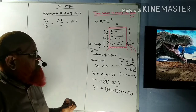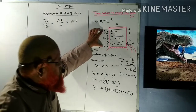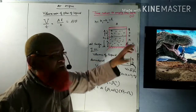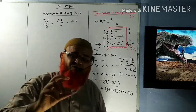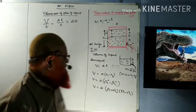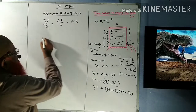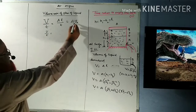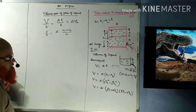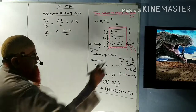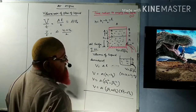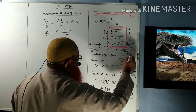We must consider the average velocity because when the liquid level was at H1 the speed was V1, and when it decreased to H2 the speed was V2. Since there are different speeds at different points, the average speed is (V1 + V2)/2. So volume rate of flow equals a × (V1 + V2)/2. Now V1 = √(2gH1) and V2 = √(2gH2).